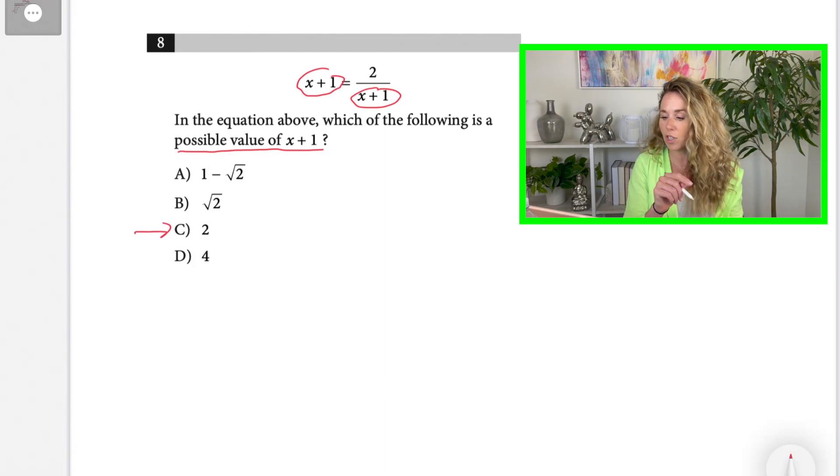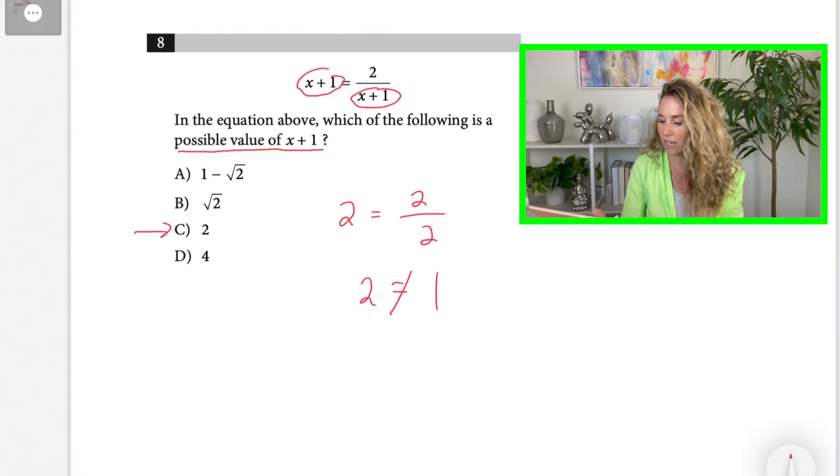I'm going to substitute 2 in for x plus 1. So I have 2 equals 2 over 2. Well, we know that's not true because 2 over 2 is 1. 2 does not equal 1, so 2 doesn't work. And then if we went to 4, just as another example, if I put in 4, then I have 4 equals 2 over 4. Well, that doesn't work either because 4 does not equal 1 half.